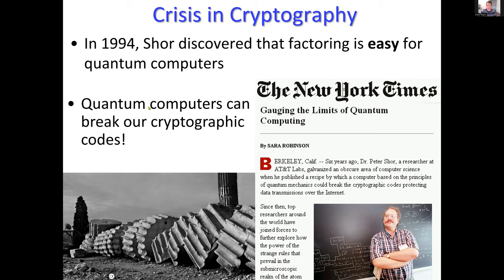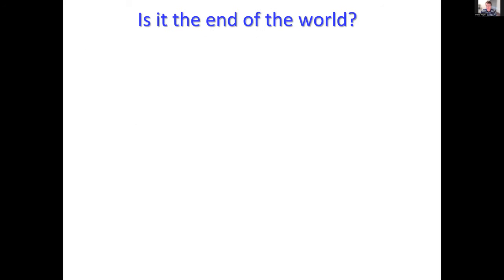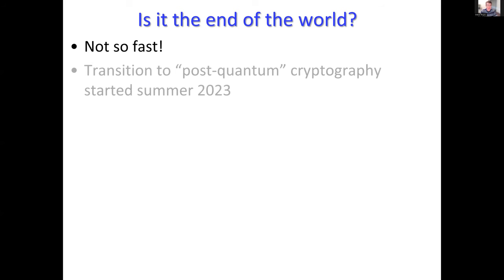Is it really the end of the world because of Shor's algorithm? Not so fast. Starting last summer, there's a transition happening where networks, browsers, and websites are moving to post-quantum cryptography — cryptography that's secure against quantum computers. It's not based on factoring integers; it's typically based on the geometry of lattices in high dimensions.